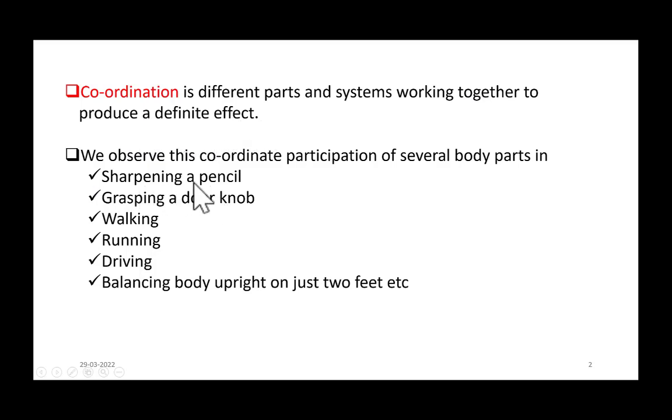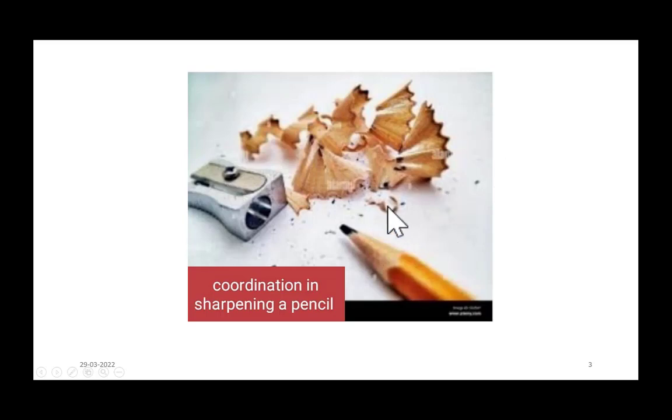Let us take the first example, sharpening a pencil. Our eyes first see the pencil and sharpener together, then our hands insert pencil into the sharpener and turn it around. Our eyes watch the amount of scrap coming out of it. If we feel that enough amount of scrap has come out, then our hands draw the pencil out. Our eyes see the sharpness of the pencil then. If we are not satisfied with the sharpness, again our hands insert the pencil into the sharpener. This process goes on until we see the pencil is well sharp. Here, eyes and hands are working together to bring required sharpness to the pencil. This is an example of coordination.